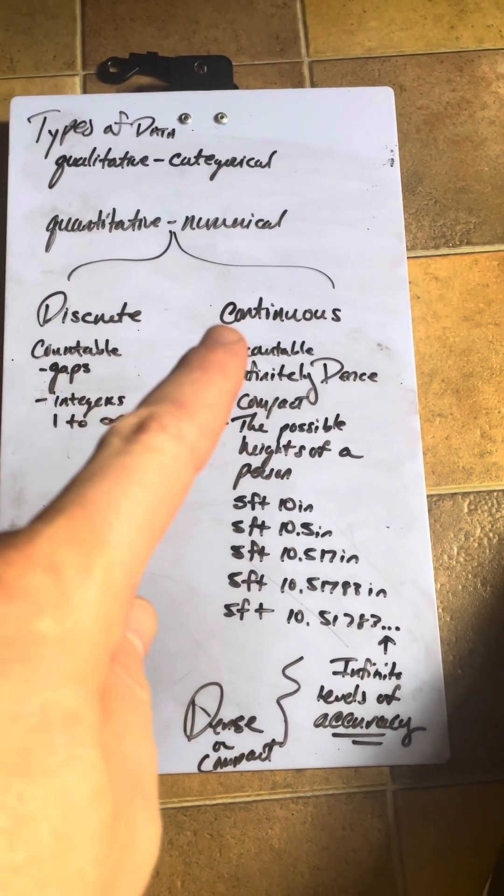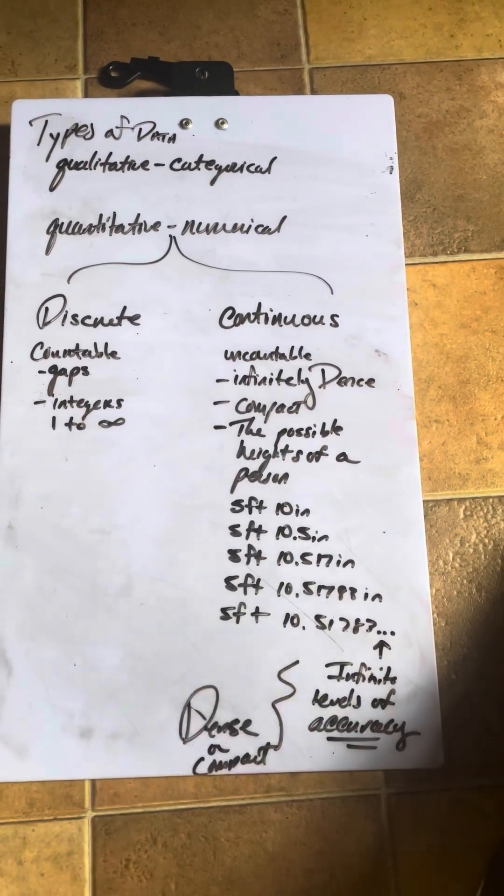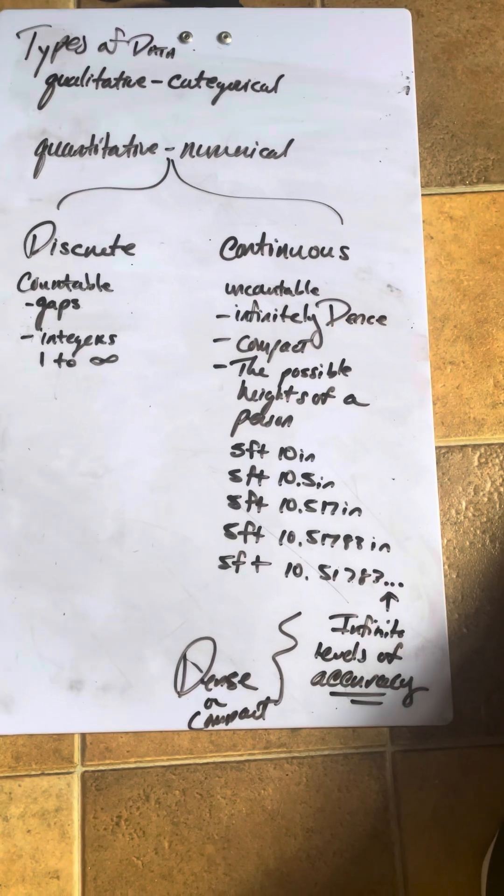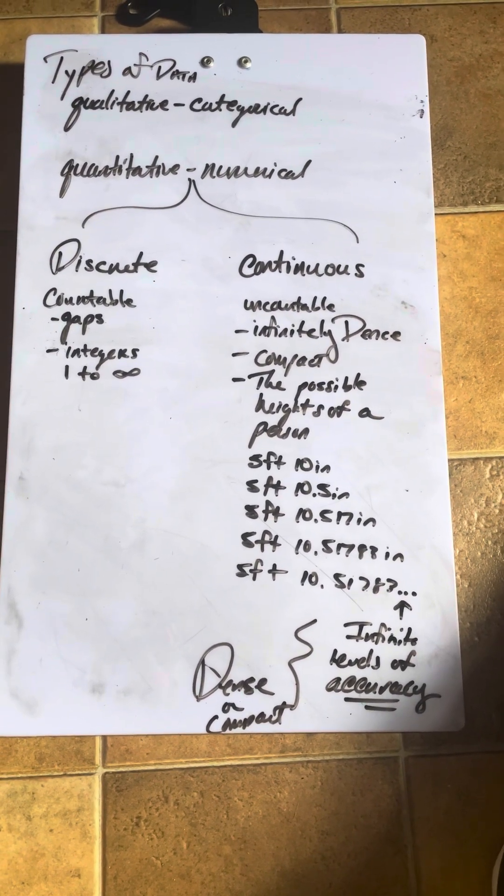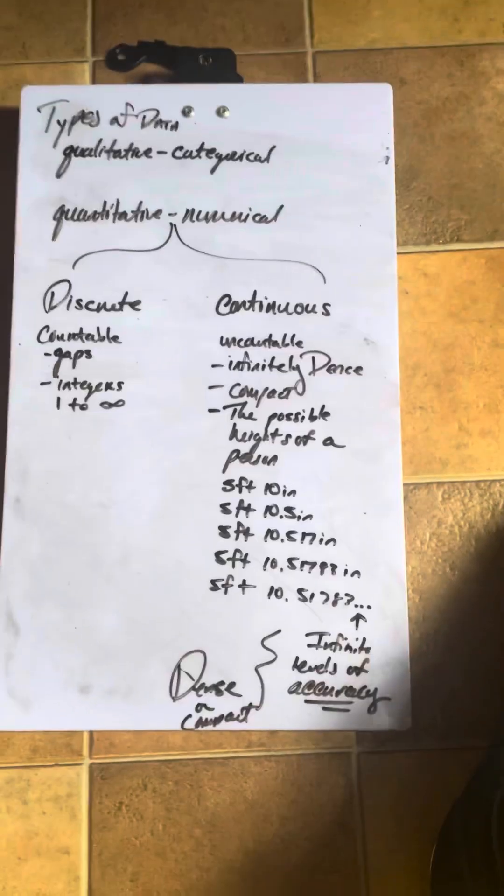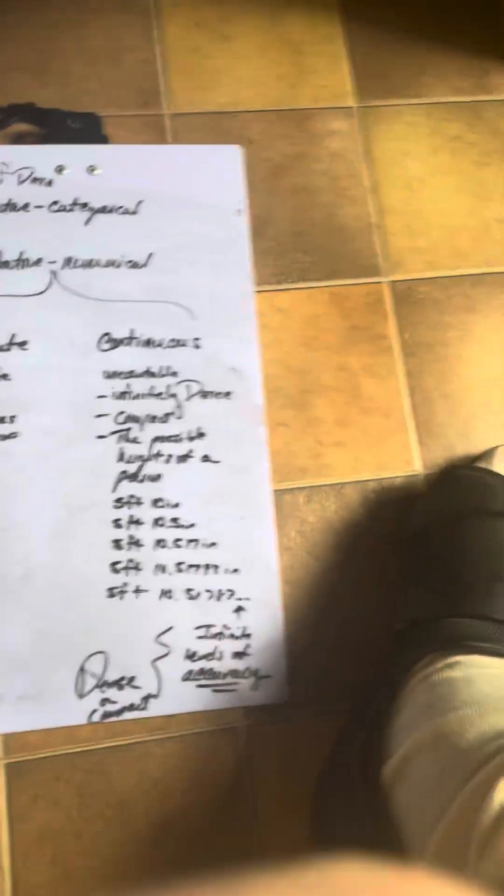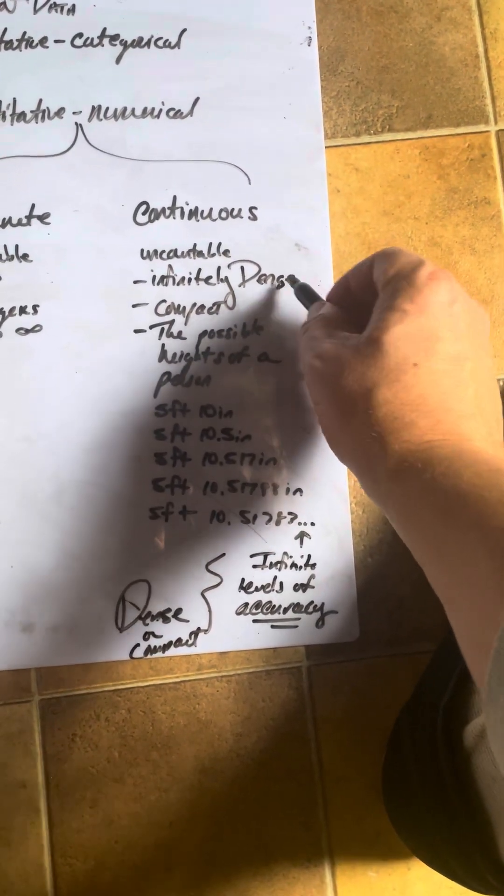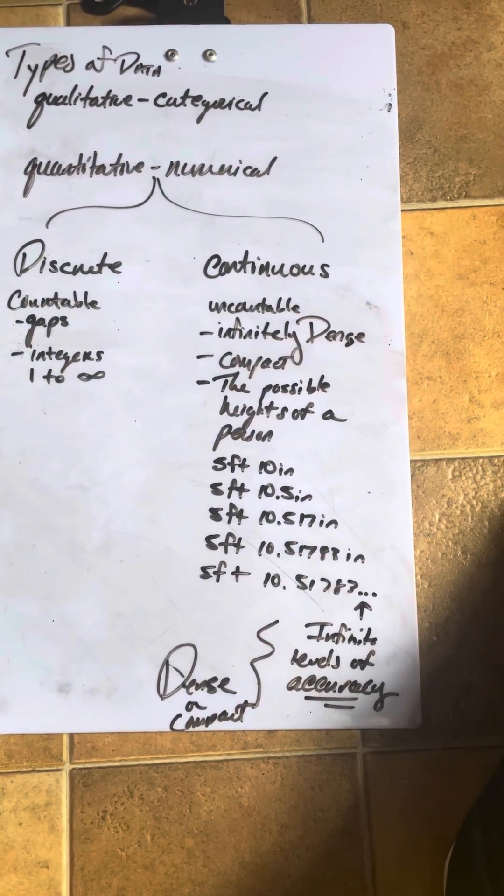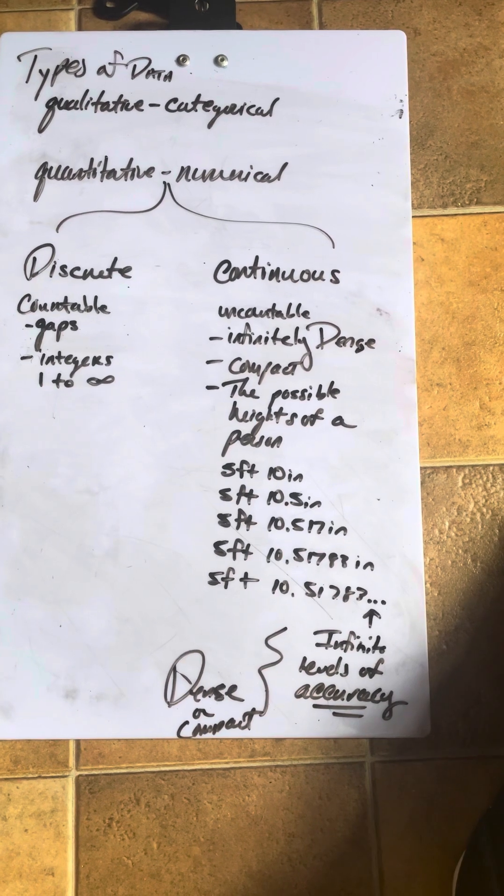Now continuous data is uncountable. I use the phrase infinitely dense. Just noticed that when I wrote the S it didn't write all the way. So infinitely dense. Another term for it is compact.